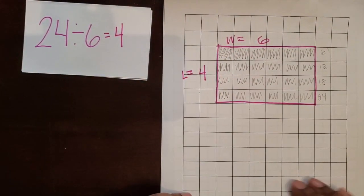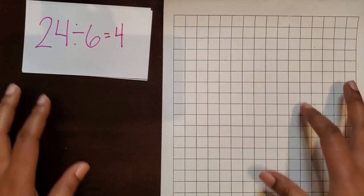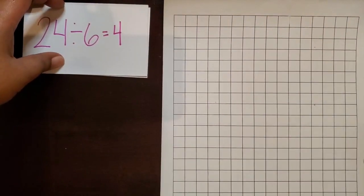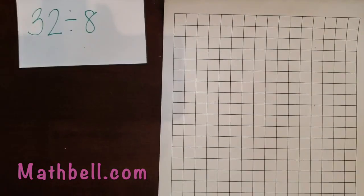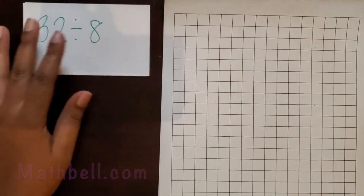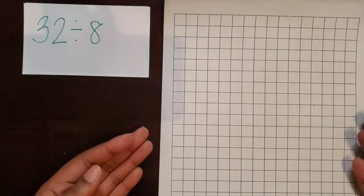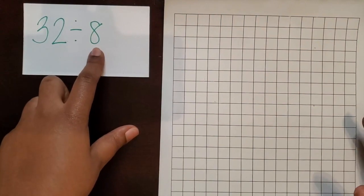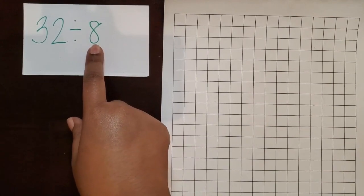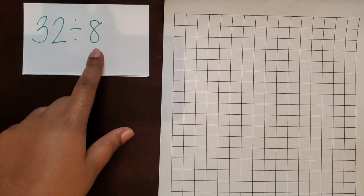We're going to look at another example with smaller grid paper. You can find these templates of grid paper over on my website, mathbell.com, where we have free resources. So our next example is 32 divided by 8. So again, I know my rectangle is going to have a total amount of 32 square units. And then I'm going to use the 8 to represent the length or the width. We did the width in the last example, we're going to do 8 as the length in this example.